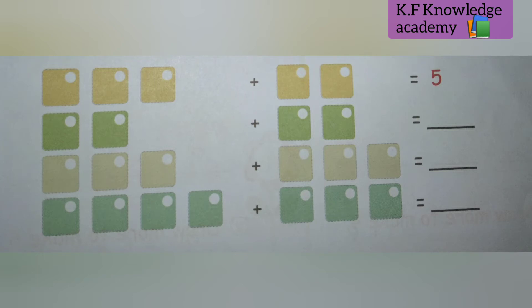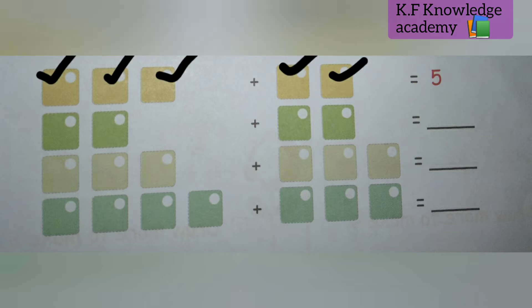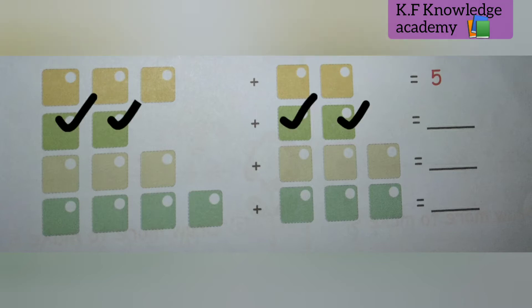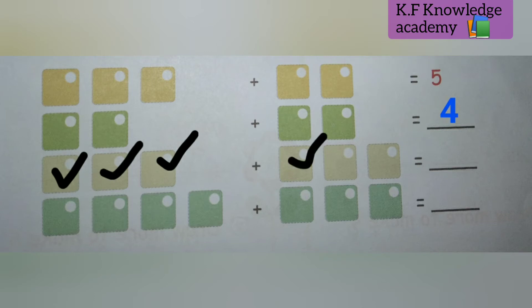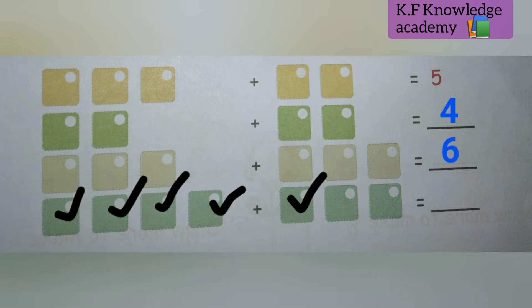Let's start. First one: there are three boxes plus two boxes, so we will add three plus two — that is five. Next: two boxes plus two boxes, it means two plus two is equal to four. You can count like this: one, two, three, four. Next: three plus three is equal to six. Next one: there are four boxes plus three boxes, so four plus three is equal to seven.